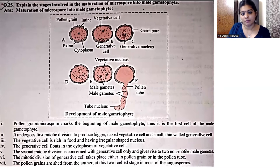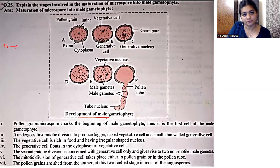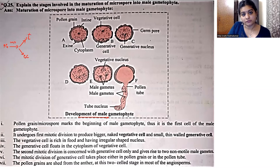Quickly इसको revise करते हैं — male gametophyte के development के लिए दो mitotic divisions होते हैं. पहला mitotic division pollen grain perform करता है, जहाँ पे यह एक vegetative cell में और दूसरे generative cell में divide होगा. Second mitotic division vegetative cell नहीं करता — सिर्फ generative cell perform करता है, जो आगे जाके दो non-motile male gametes में break होगा.